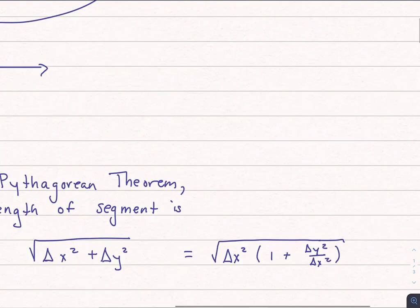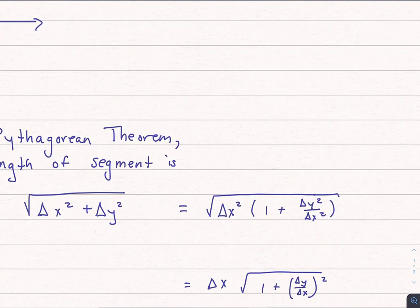Now what I could do is pull out a delta x squared. Why would I want to do that? Well, because I know where this is going. If I did that, I could rewrite the square root of delta x squared as delta x, and I'm left behind with this.